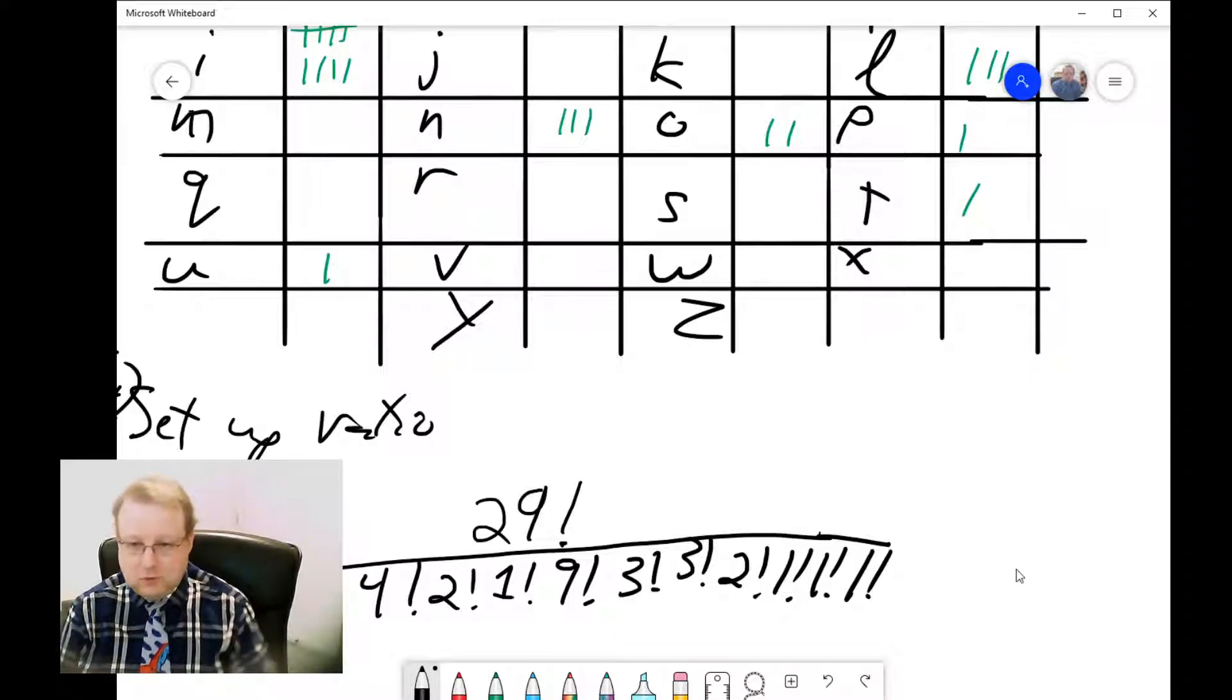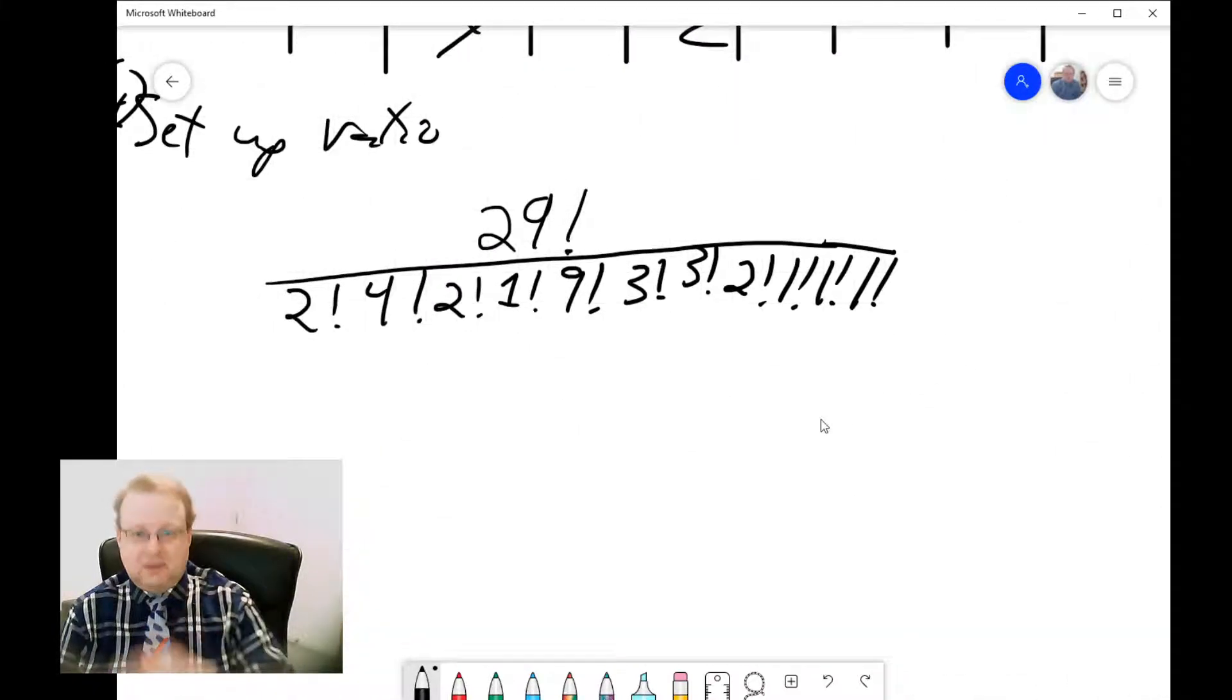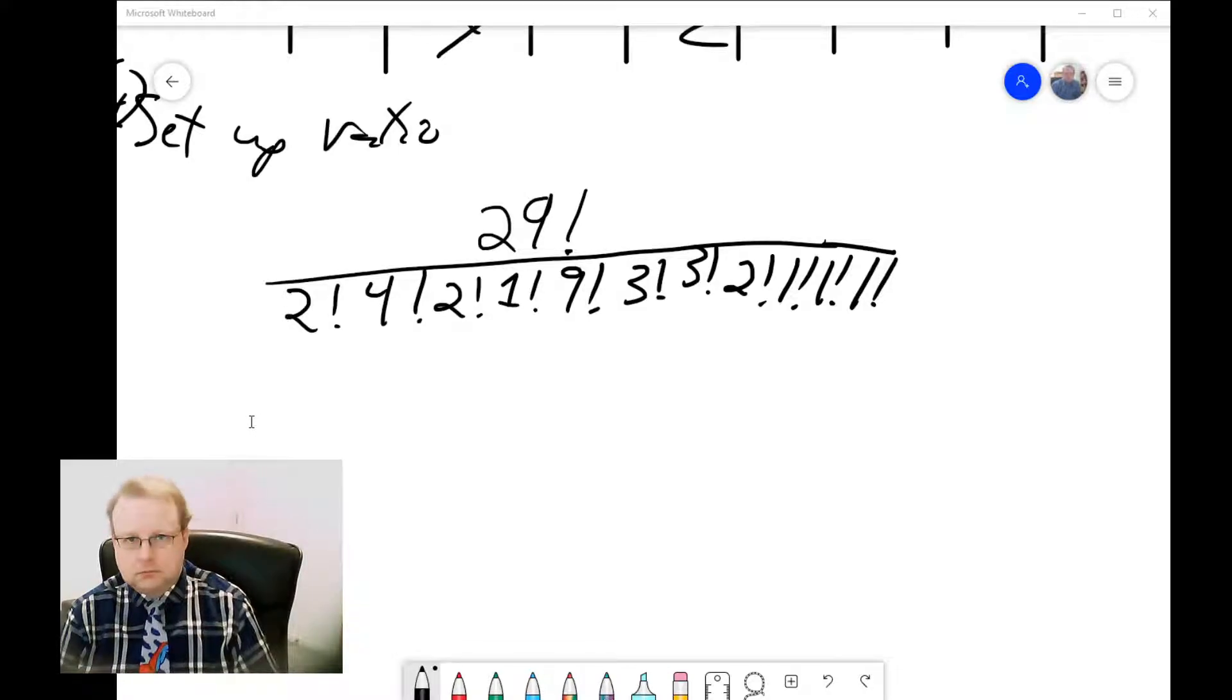The one factorials are kind of optional. In a lot of cases, you'll see people leaving them out. But if you really want a rigorous, systematic way to attack every problem of this type, just include a factorial for every letter of the alphabet, whether they're one factorial or zero factorial, and you will eventually get there.